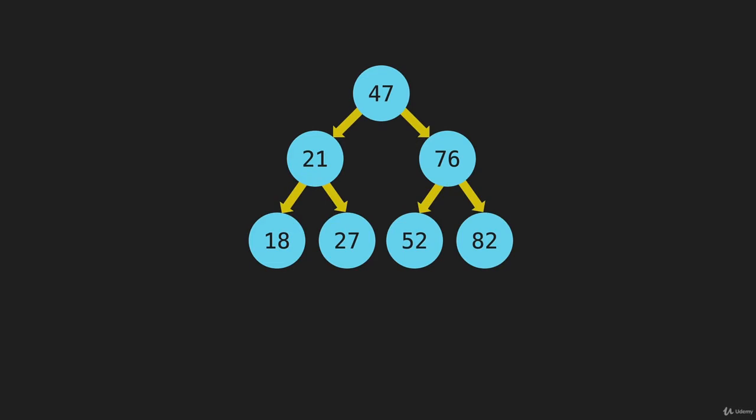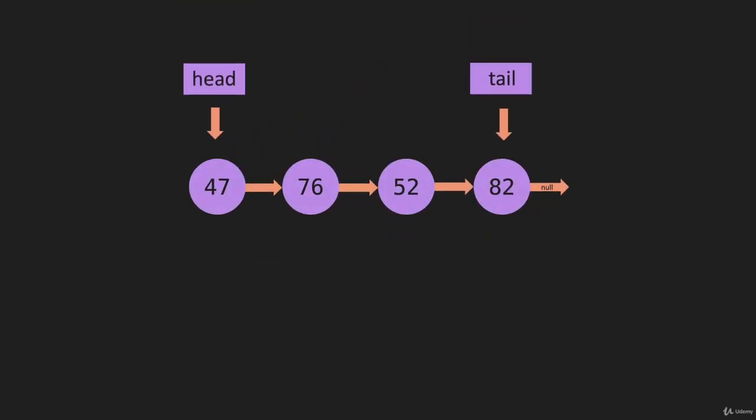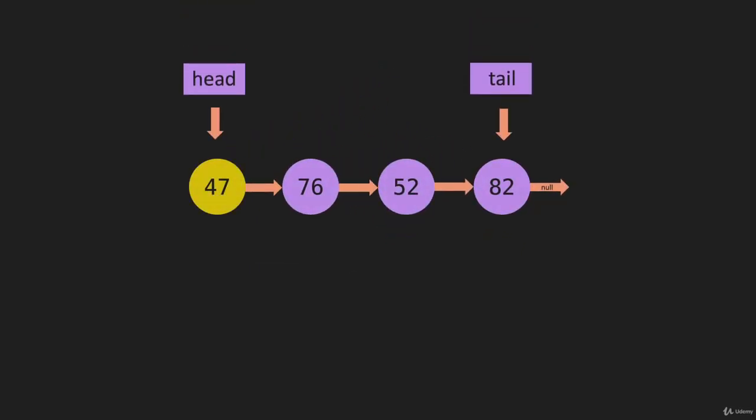Traversing, if you had something simpler like a linked list, would just be going through each item from beginning to end. You might take all of these values, add them to an array, and then return that array.